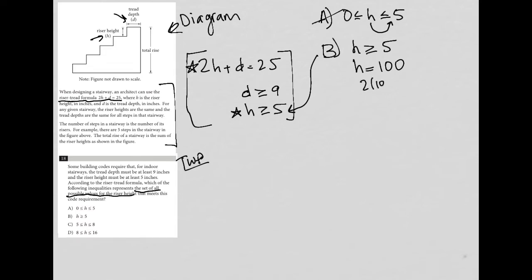What happens if H is equal to 100 when I plug that into the riser tread formula? Well, I'd have 2 times 100 plus D equals 25, which is 200 plus D equals 25, and D equals negative 175. And the other part of our code requirement is that D must be greater than or equal to 9. In this case, D is negative 175, so that's the reason why B cannot be right. Because any number greater than or equal to 5 that doesn't work makes B incorrect. So H being greater than or equal to 5, and that's the only limitation, is not a good answer for us. So A is gone, B is gone.